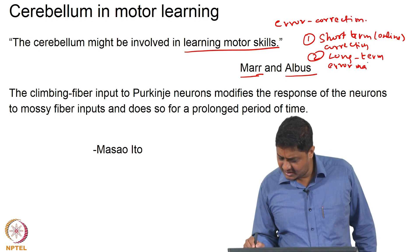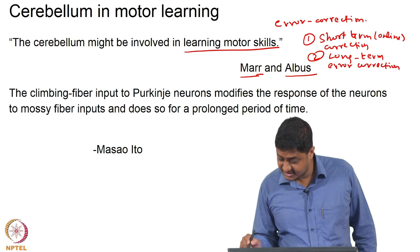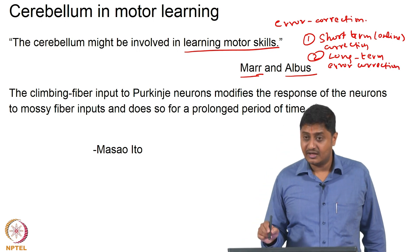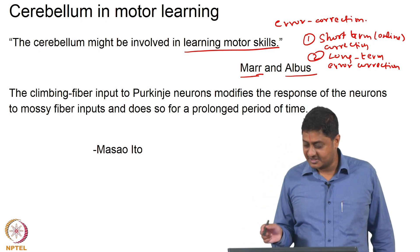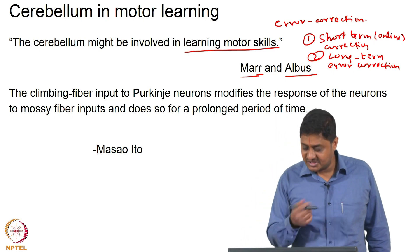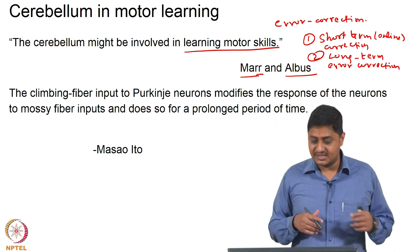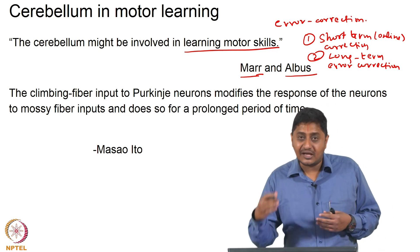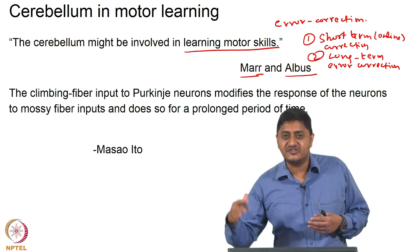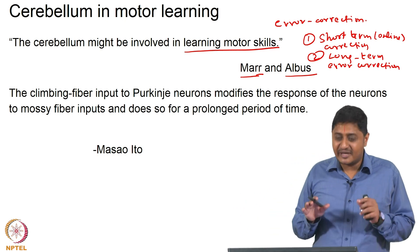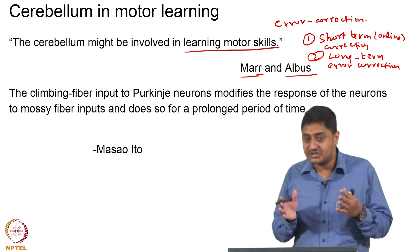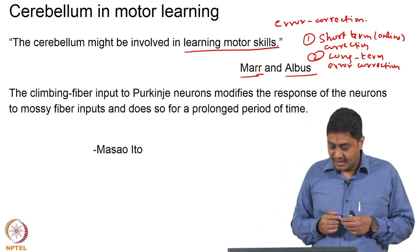For example, you make a mistake, realize it, and correct it — that is short-term error correction. But if you make a mistake and keep correcting it over successive repetitions of the same movement, you become more and more skilled at performing that movement — that is long-term error correction or motor learning.